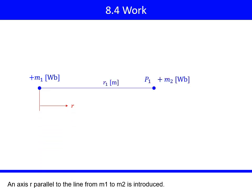An axis R parallel to the line from M1 to M2 is introduced. Its origin is at M1. The coordinates of M2 is R1.